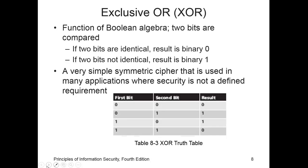The exclusive OR operation, or XOR, is a function of Boolean algebra whereby two bits are compared. If the two bits are identical, the result is binary 0. If the two bits are not the same, the result is binary 1. The binary system and the logic behind XOR is covered in prerequisite courses on how the binary system works and how it is translated.